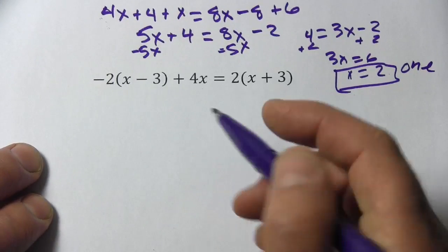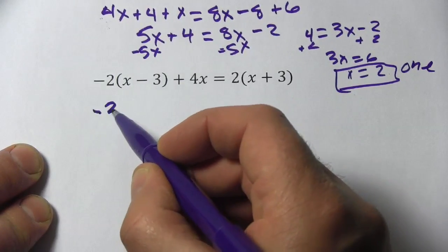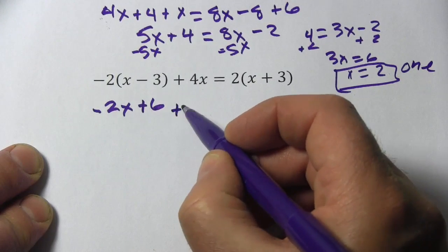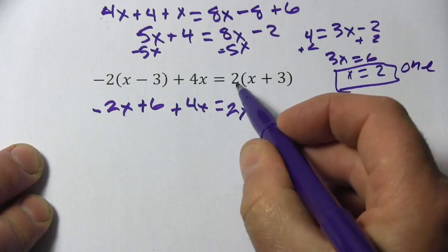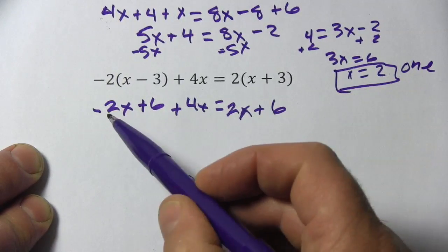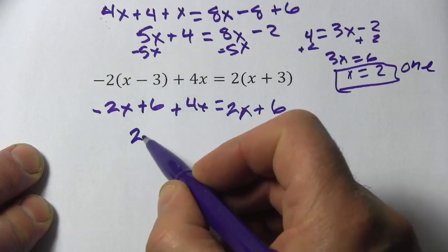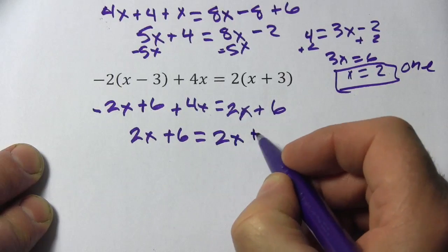Alright, let's try one more here. Again, we'll start with the distribution. Negative 2 times x, negative 2x. Negative 2 times a negative 3 is a positive 6. Then we have plus 4x. And 2 times x is 2x. And 2 times 3 is 6. Combining our like terms over here, negative 2x and a positive 4x, that's a positive 2x. Plus 6 equals, oh, 2x plus 6. You may already see something's up here.